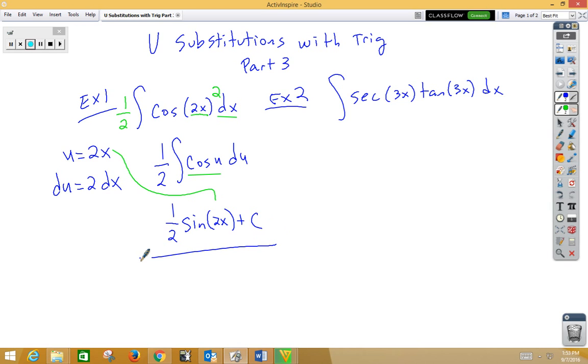In example 2, secant tangent. The inside function is 3x, so u is 3x. Du would be 3dx. Notice we do not have a 3dx. So if I want to multiply by a 3 on the inside, multiply by 1 third on the outside, that gives us 1 third integral secant u tangent u du.